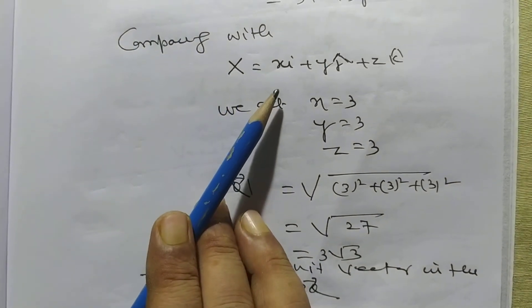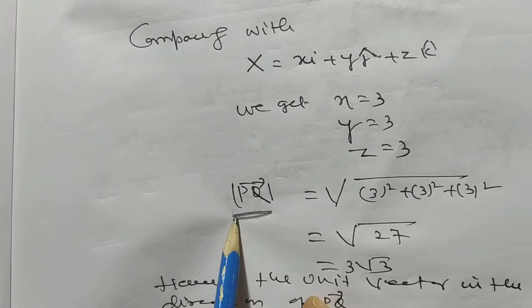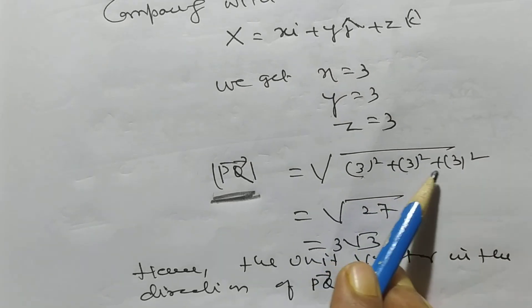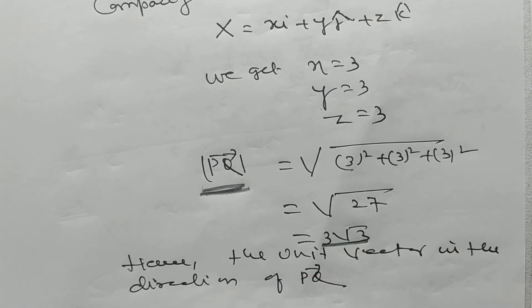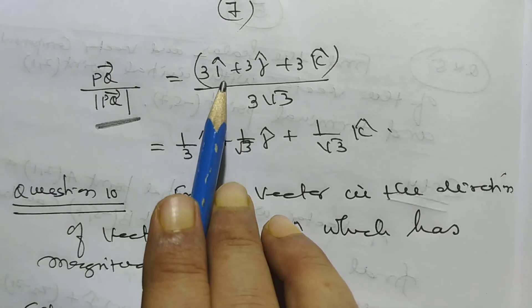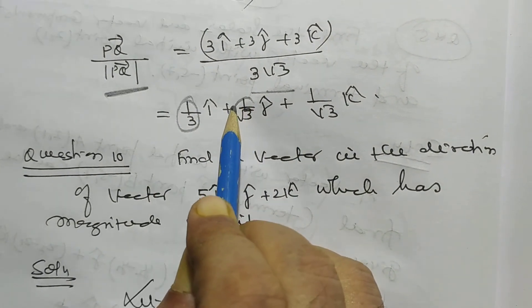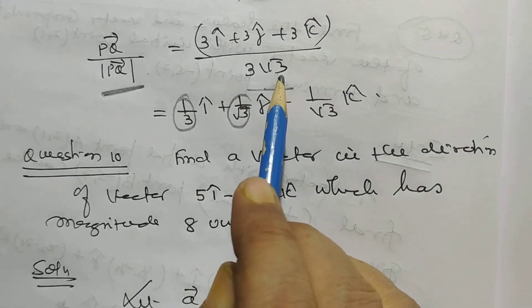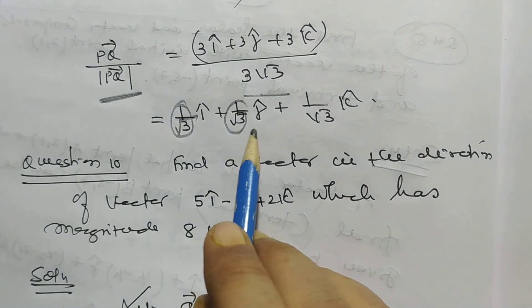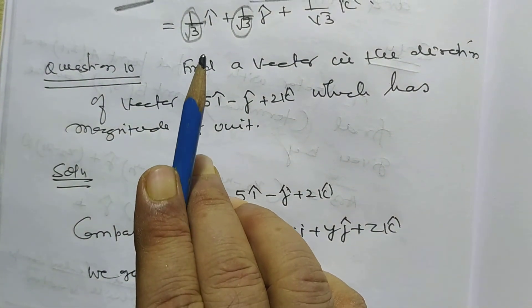Comparing with xi + yj + zk, we get x = 3, y = 3, z = 3. The unit vector in the direction of PQ equals vector PQ divided by its magnitude: (3i + 3j + 3k) / (3√3) = (1/√3)i-cap + (1/√3)j-cap + (1/√3)k-cap. In this way, we can solve this type of problem.